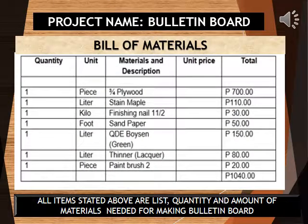We requested for an approval of a bulletin board project. After it was approved, we were going to make a bill of materials, in which the content is almost the same as the requisition form. It contains the quantity needed, the unit of measure, the materials and their description, the unit price, and the total amount. Here is the example of the bill of materials for the bulletin board.